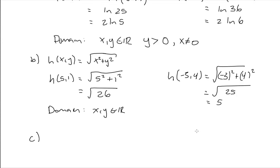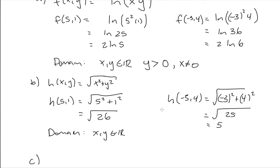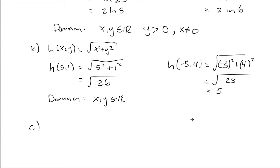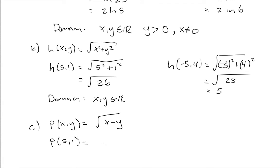Finally, the last function is p of x, y equal to the square root of x minus y. They'd like us to evaluate this at (5, 1). We replace all x's by 5 and all y's by 1, giving us the square root of 5 minus 1, which is the square root of 4, which equals 2.